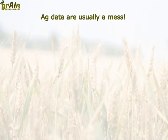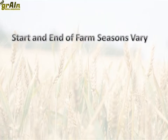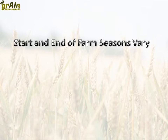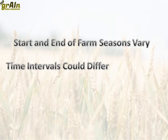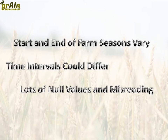There are also other factors that should be considered while dealing with temporal patterns in ag data. First of all, farming data could have different start and end from one season to another, so the length of farming seasons are not the same. Second, they could have different time intervals — for instance, your temperature sensor might read every minute while your moisture sensor could read every hour or every day. Third, sensors could malfunction, misread, or go off, so you need to deal with many null values, outliers, and errors. As a result, any data science solution should take into account all of these factors.